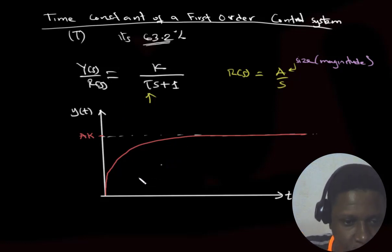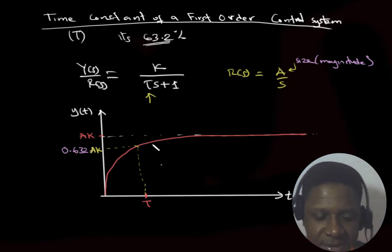If we assume that we have tau here, this is time tau. If we go up from here and then to the left, here we will be having 0.632AK, where AK is our final value as shown here. Let's see an example.